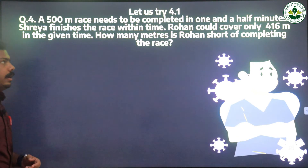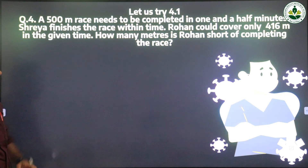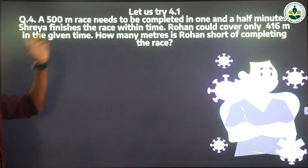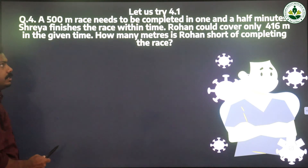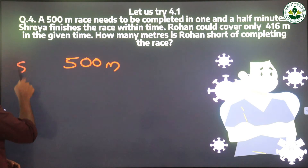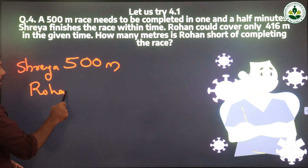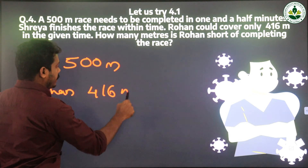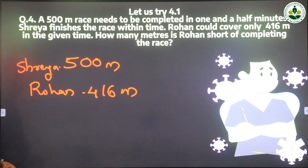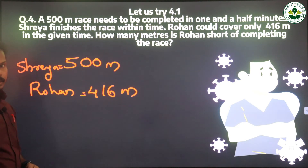In the question they give two things. First: one and a half minutes to complete a 500 meter race. Shriya finishes 500 meters on time. But Rohan only completes 416 meters in that time.